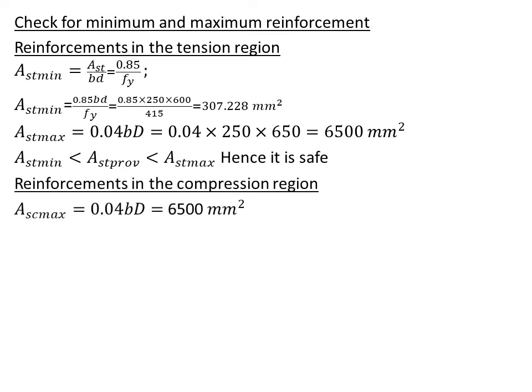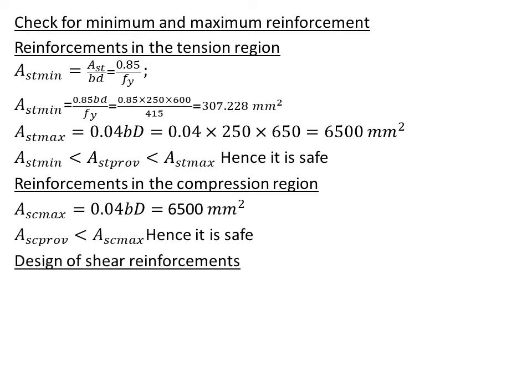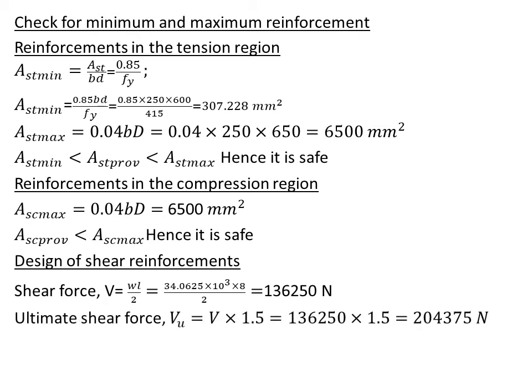Now reinforcements in the compression region. Ast max equals 0.04 × bd, which is 6500 mm². It also satisfies the condition, hence it is safe. Next we design the shear reinforcements. We find the shear force. Since it is assumed to be simply supported, the shear force formula is w × L / 2. Here w uses total load since we are finding the actual shear force, and we get 136,250 N. Ultimate shear force, since we multiply with factor of safety, we get 204,375 N. Then we find the nominal shear stress, that is the stress acting upon the beam. τv equals Vu / (bd) and we get 1.3625 N/mm².